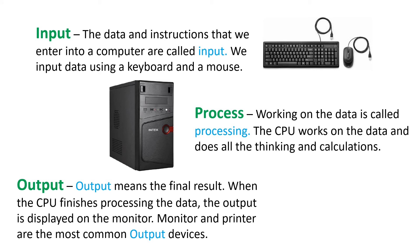Output means the final result. When you press a key on the keyboard — for example, pressing 'F' — that is the input. The CPU then thinks about what to do, which is the processing. Then it shows you the output on the monitor, where you can see 'F' written. So 'F' is the final result — that is the output. When the CPU finishes processing the data, the output is displayed on the monitor.